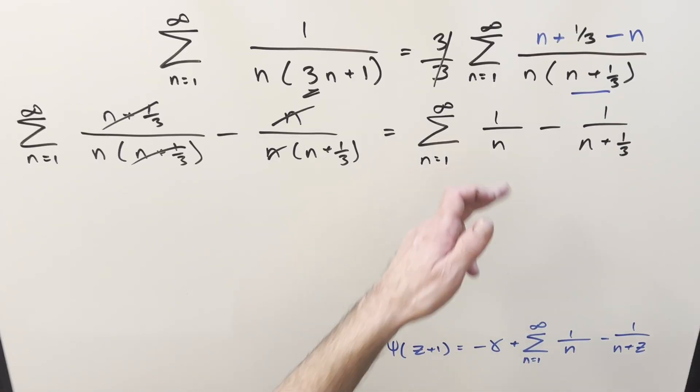Now from here we can take this and use our series expansion for the digamma function that we have down here, where we express it with minus this right here is the Euler-Mascheroni constant, which is around 0.577.